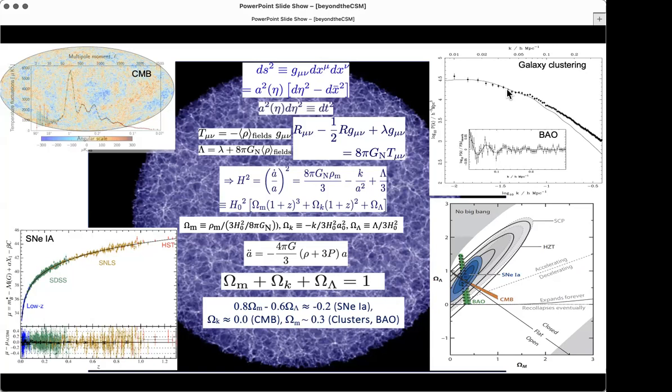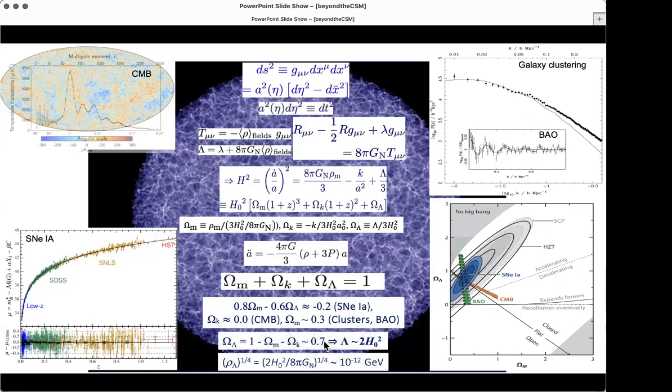The peak is at about one degree. You see the spots are typically one degree in size, and that corresponds to a multipole of about 200. We look at the same oscillations that you see imprinted here in the microwave background, which are due to the coupling of baryons and photons before the universe becomes neutral and transparent. The same oscillations are also imprinted in the power spectrum of the clustering of galaxies. These are called the baryon acoustic oscillations. What has been done is to use this data to infer that 0.8 times omega matter minus 0.6 times omega lambda is about negative 0.2, coming from the supernovae.